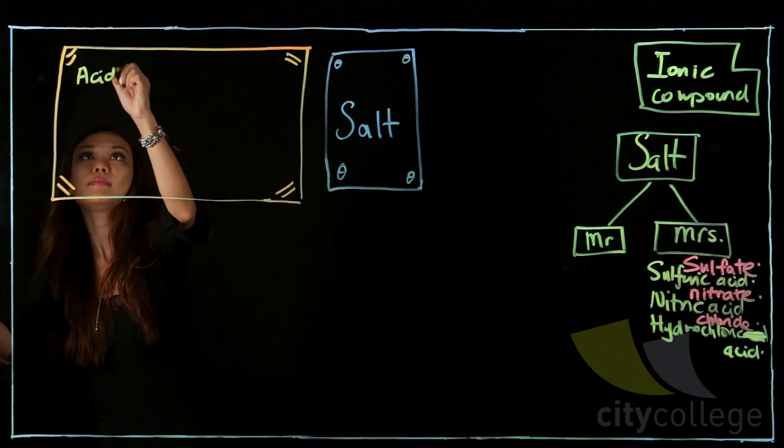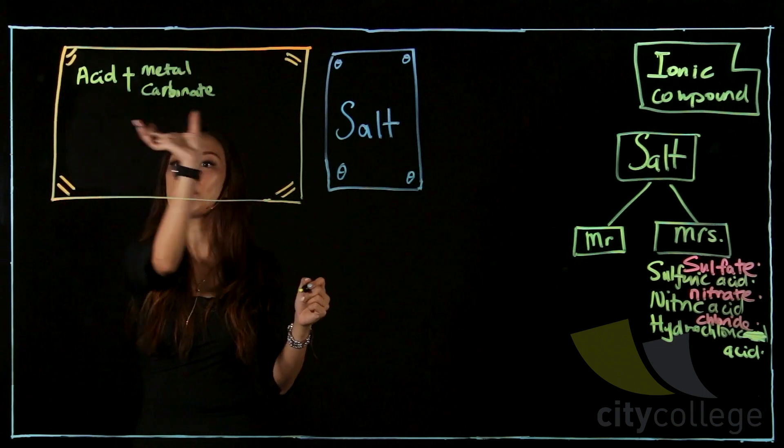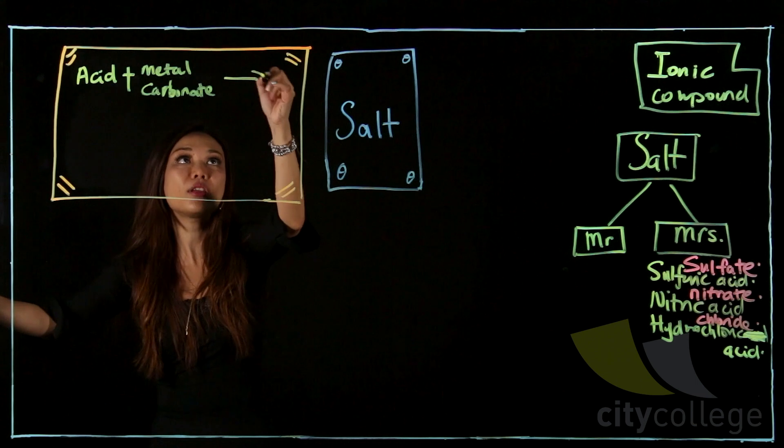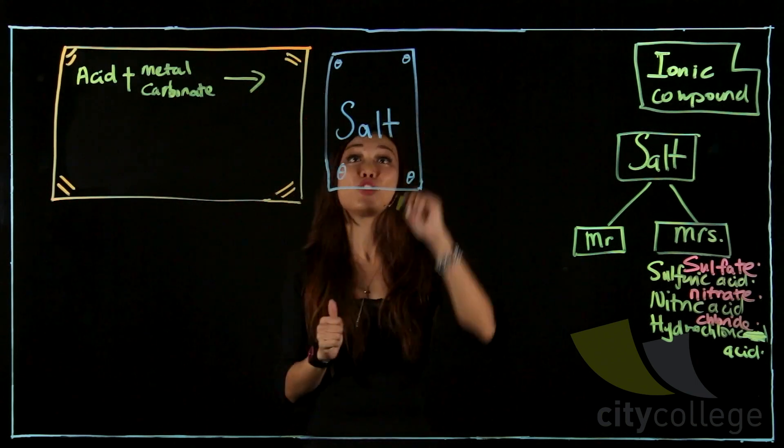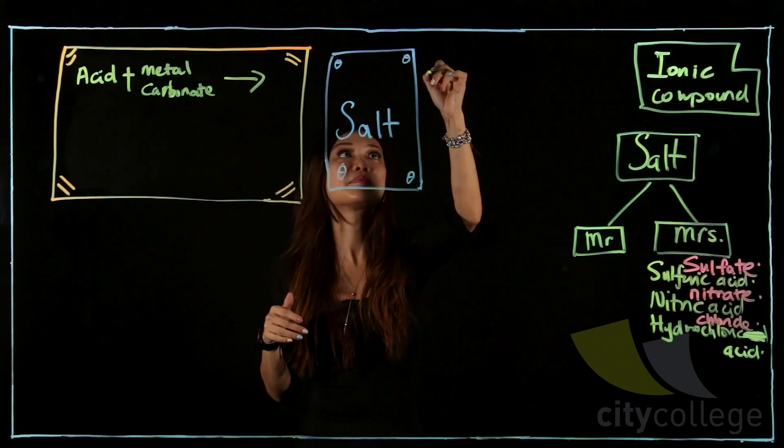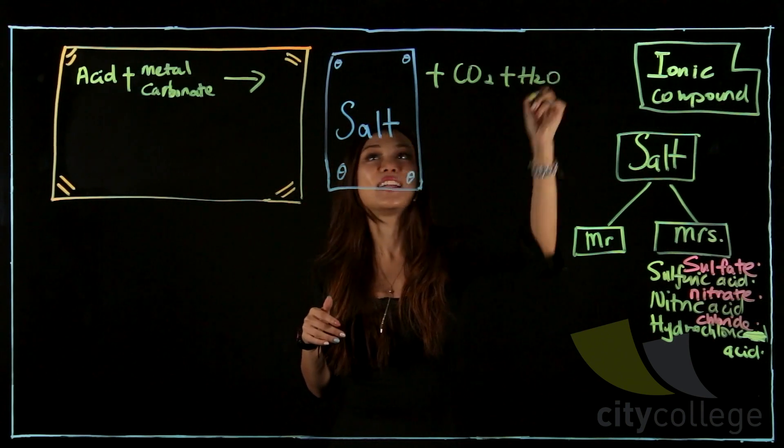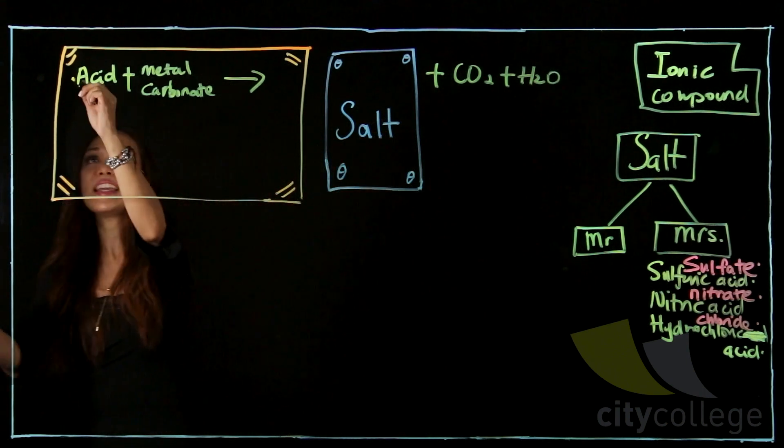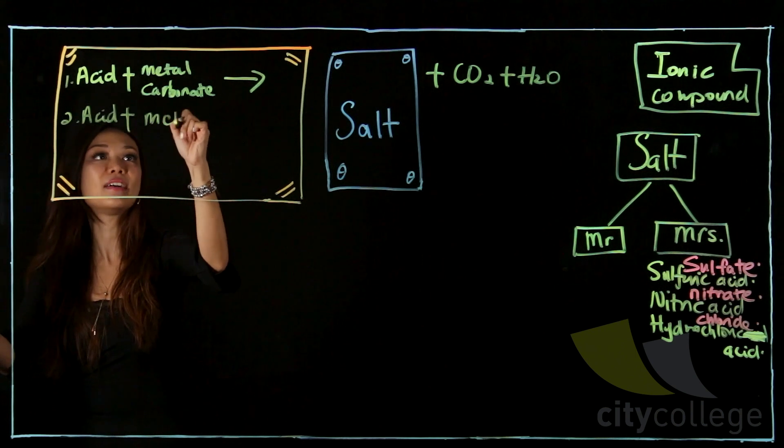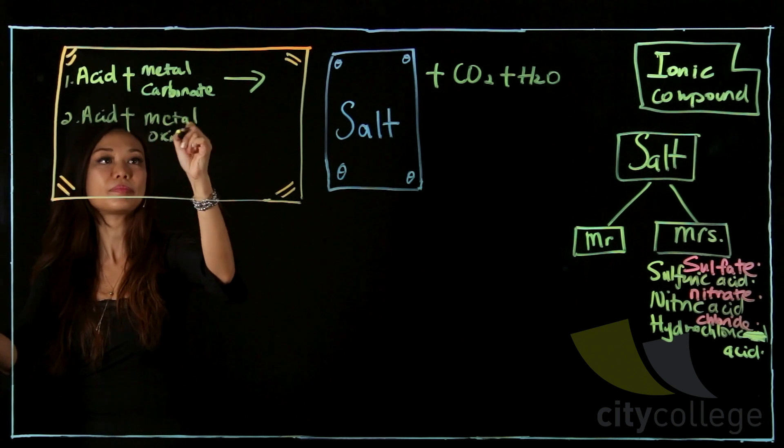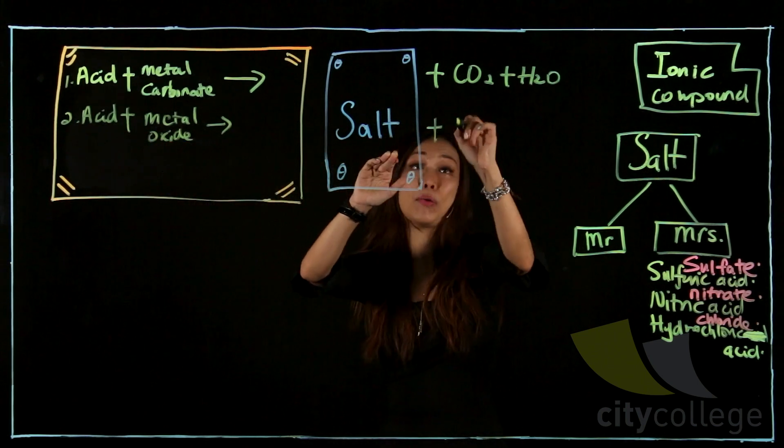So acid plus metal carbonate. Acid plus metal carbonate will actually produce three things: salt, which is your main character, plus your carbon dioxide and water.